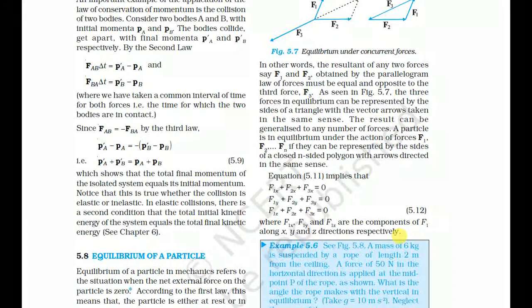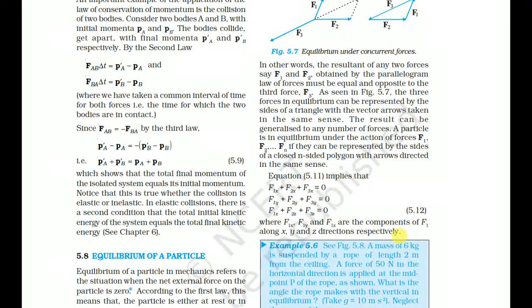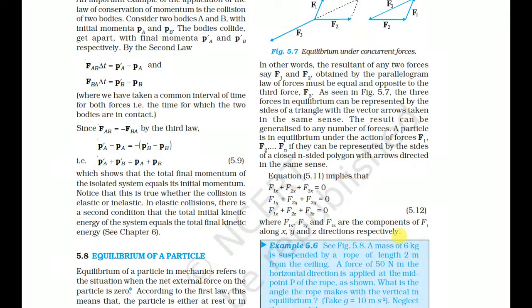Consider a tug of war — two teams are pulling a rope from both sides, trying to pull it to their own side. Equal and opposite forces are applied, so the rope will not go to either side. The resultant force is zero. If one team applies more force, they win.